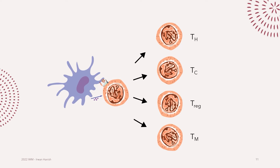It is important to familiarize yourself with abbreviations of these cells' names to avoid confusion when studying textbooks or references. T helper cells are abbreviated TH, cytotoxic T cells to TC, regulatory T cells to Treg, and memory T cells to TM. Be aware these are not the only abbreviations — cytotoxic T cells can also be abbreviated CTL, short for cytotoxic T lymphocytes.